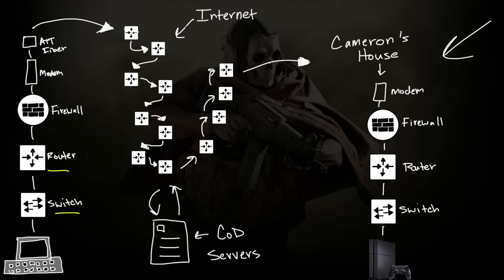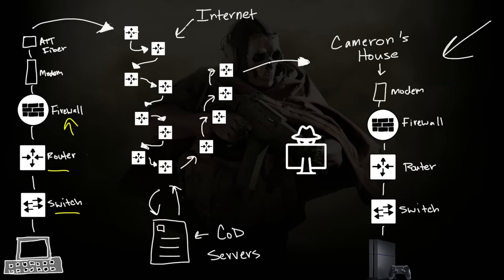We looked at our switch and we looked at a router. What about a firewall? Simply, it's protecting you — protecting your network. There are some bad people out there, hackers constantly trying to find ways to steal your stuff. While they'll try to get into your network, a good firewall will keep them out. A firewall's job is to block anything that shouldn't come through or go out and only allow the good stuff.